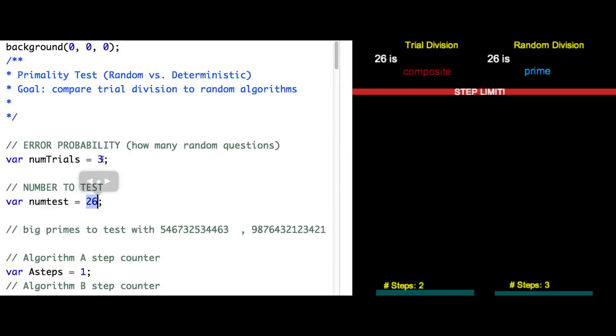However, we can fix this by increasing the number of trials and then the probability of an error goes down. And we see now that the outputs more or less match.